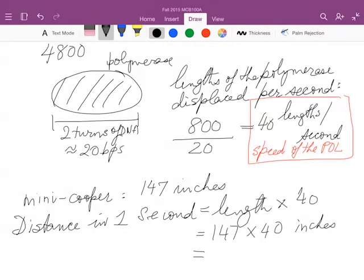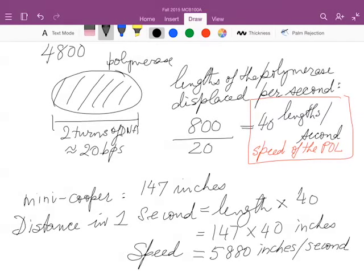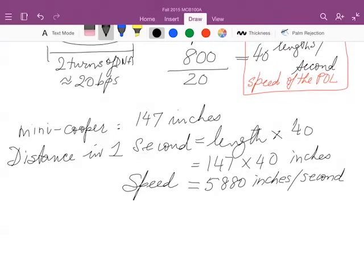Which works out to 5,880 inches per second. And that is a speed corresponding to the speed of the polymerase if we assume that the car moves the same equivalent length per second. So convert this into miles per hour.